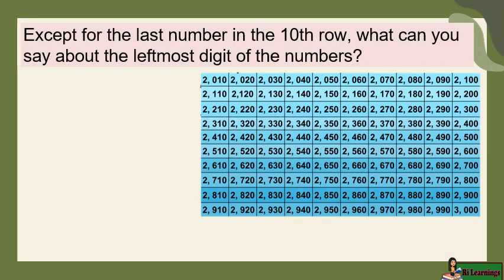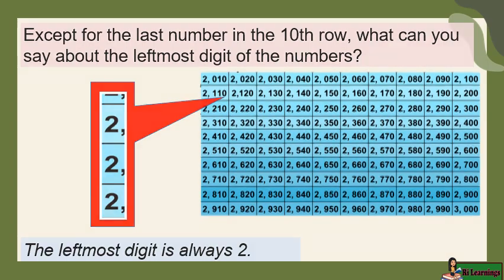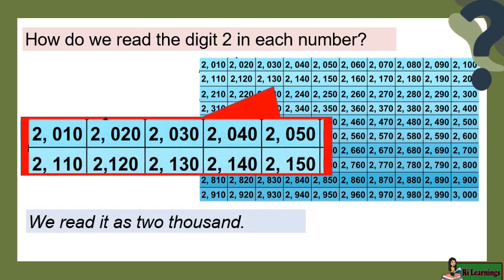Except for the last number in the 10th row, what can you say about the leftmost digit of the numbers? The leftmost digit is always 2. How do we read the digit 2 in each number? We read it as 2,000.